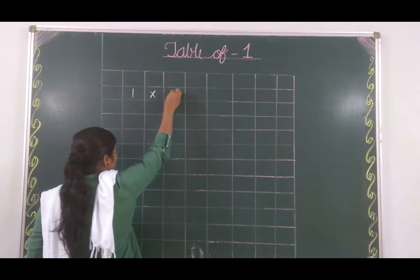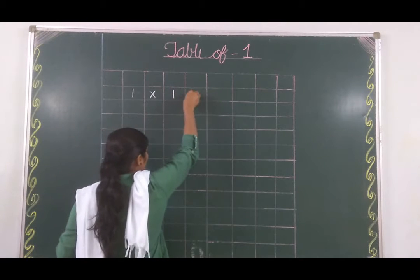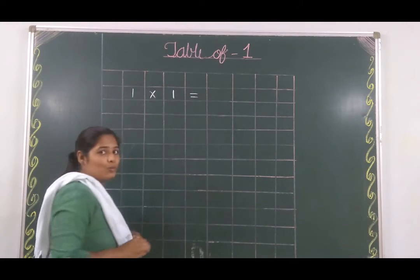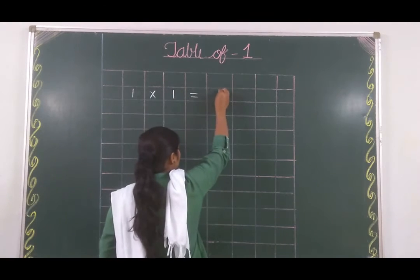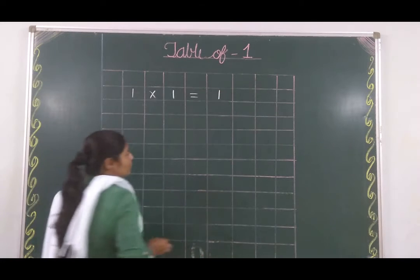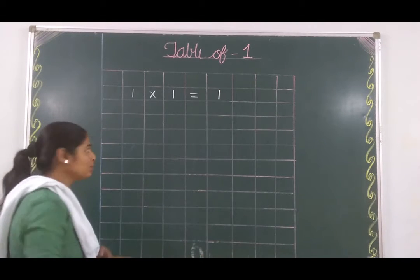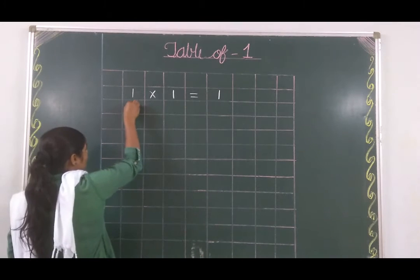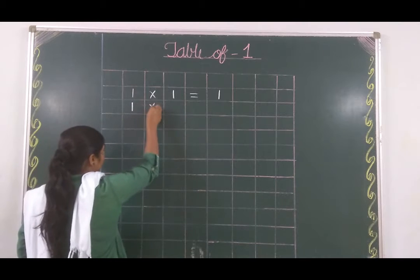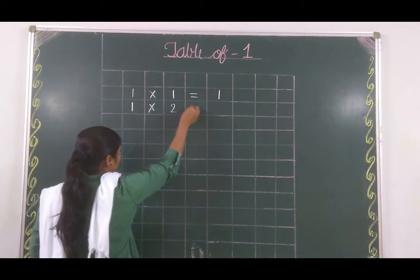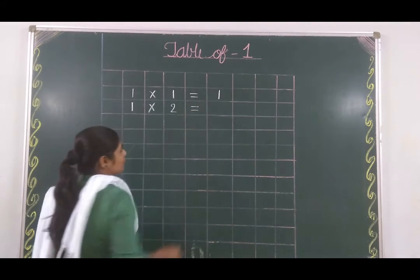1 ones are 1, 1 ones are 1. And what comes after 1? 2. 1 twos are 2.